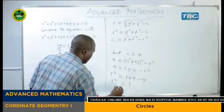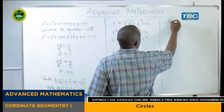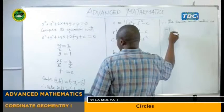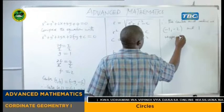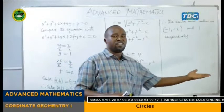Therefore R equals positive 1. Therefore the center and radius are: center (−1, −2) and radius 1. That is the way to find the center and radius for the given equation of the circle.